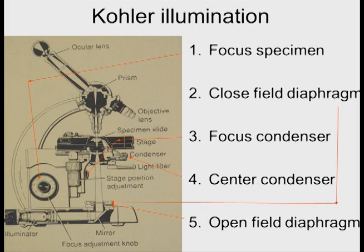Again, you focus the specimen — you put the specimen in there and observe to see it. Then you close the field diaphragm so you can see the edges of the diaphragm, to allow you to focus the condenser. You focus the condenser with a little knob. Now you might see it's a little bit off center, so you use the centering knobs around the side to center the condenser. And then finally, you open the field diaphragm right to the edge of the field of view.